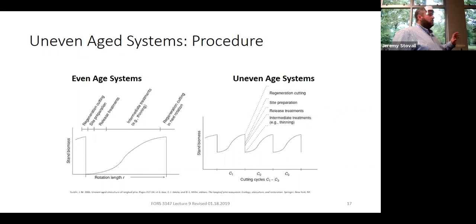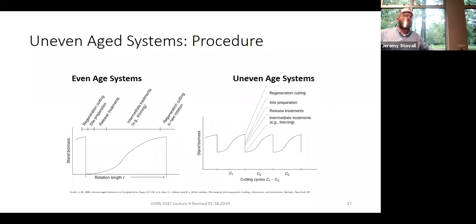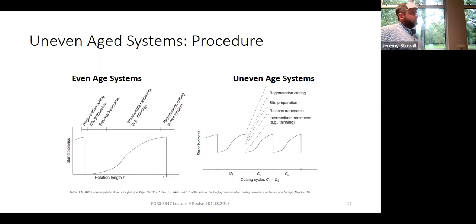A conceptual diagram illustrates the difference: in even-aged management on the left, you clearcut, go through establishment, intermediate treatments, and the stand grows toward carrying capacity before being clearcut again. On the right, uneven-aged management — you go in and do everything at once, then 10 years later return to do the same in slightly different locations. Your biomass never goes down to zero. It's a completely different concept.